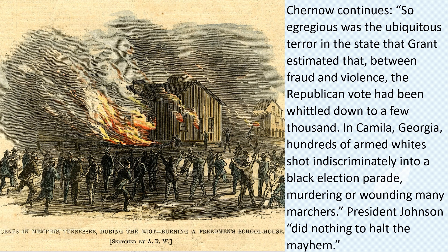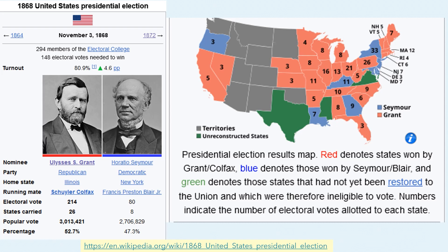Chernow continues: so egregious was the ubiquitous terror that Grant estimated that, between fraud and violence, the Republican vote had been whittled down to a few thousand. In Camilla, Georgia, hundreds of armed whites shot indiscriminately into a black election parade, murdering or wounding many marchers. President Johnson did nothing to halt the mayhem. Ulysses S. Grant won the presidential race handily, although he won only 53% of the popular vote. He won the Electoral College by a landslide, 214 to 80. Bolstered by black and white carpetbagger votes, all Southern states, with the notable exception of Georgia and Louisiana where Klan violence was rife, tumbled into the Republican column.